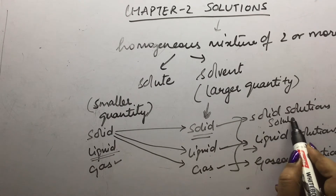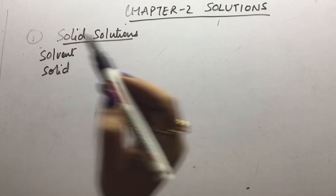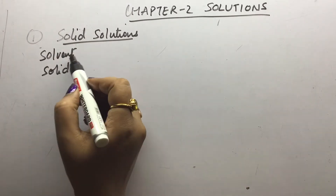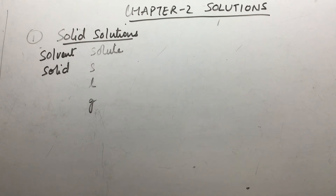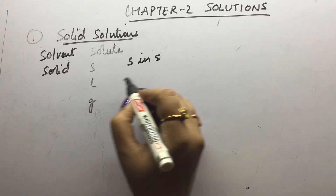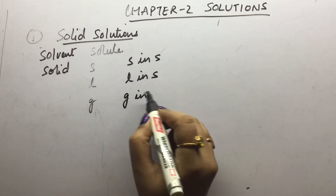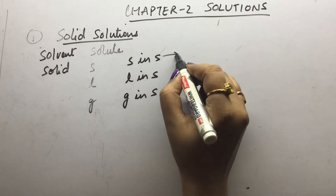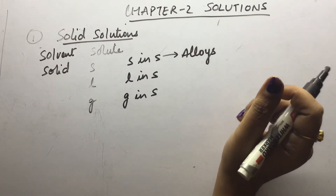In solid solutions, the solute can be solid, liquid, or gas. We read these as solid in solid, liquid in solid, and gas in solid. Solid in solid — the most common example is alloys. We use bronze and other alloys which have uniform composition. Liquid in solid — the most common example is mercury in sodium, which we call sodium mercury amalgam. Gas in solid — for example, hydrogen in palladium, which we use as a catalyst to convert double bonds or triple bonds to single bonds.